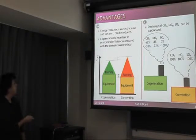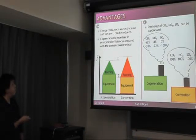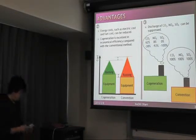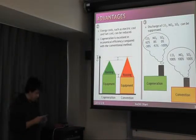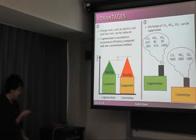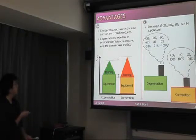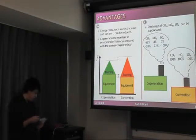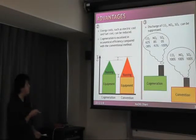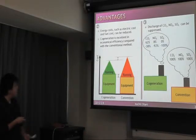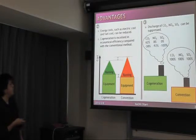With cogeneration, equipment cost is higher, but running and working cost is lower. The total cost is lower than the conventional method.